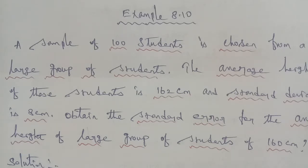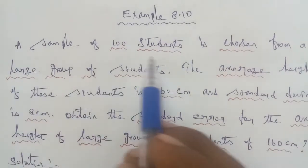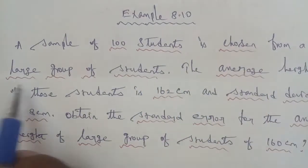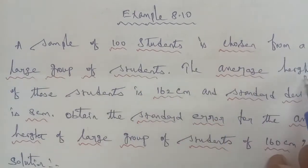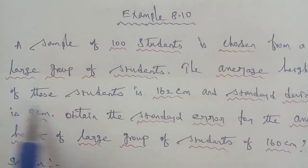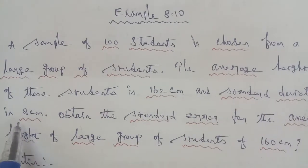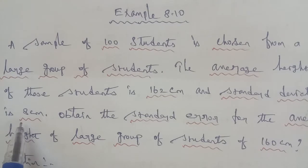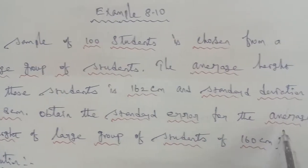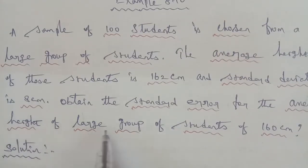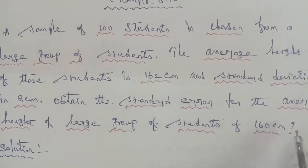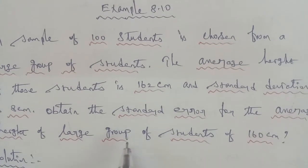Hi students, I am Gopinak. 12th business math exam, question 8.10. A sample of 100 students is chosen from a large group of students. The average height of the students is 162 centimeter and the standard deviation is 8 centimeter. Obtain the standard error for the average height of the large group of students of 160 centimeter.